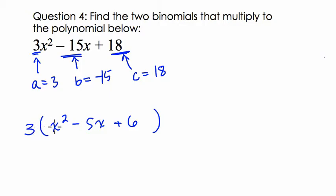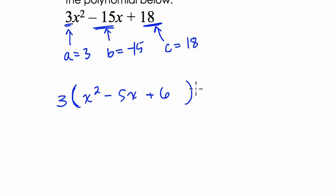Why? Because 3 times x squared is still 3x squared, and 3 times minus 5x is minus 15x, and 3 times 6 is 18. So I essentially divided 3 out of each term, but then kept things equivalent by surrounding with parentheses and multiplying the 3 back.